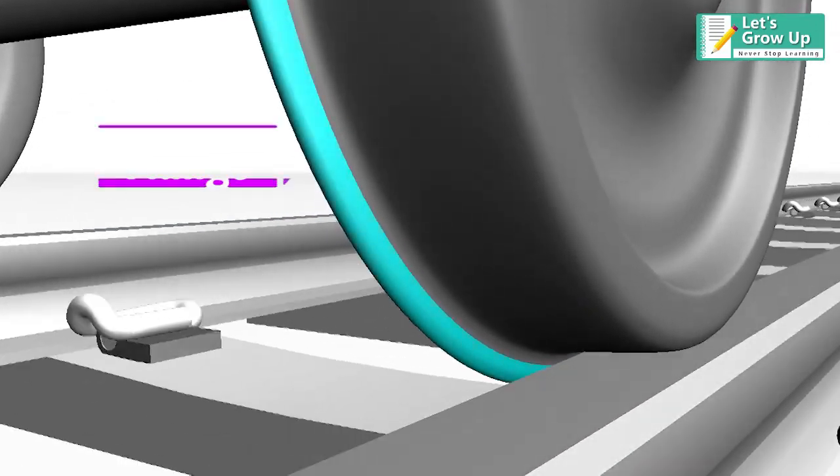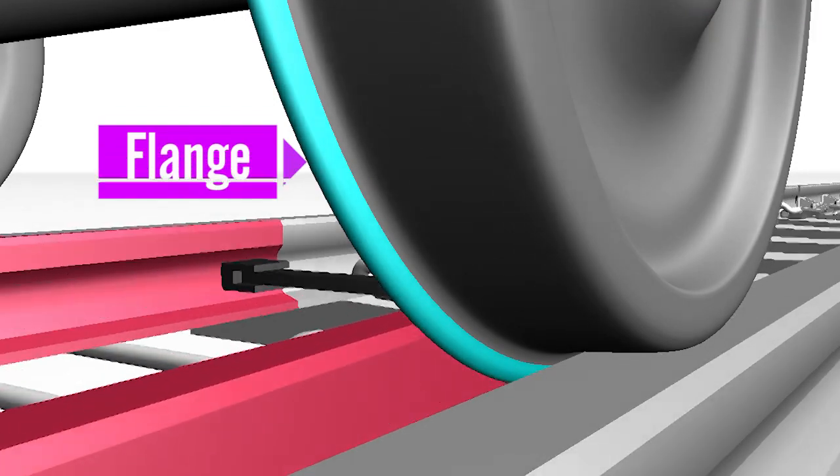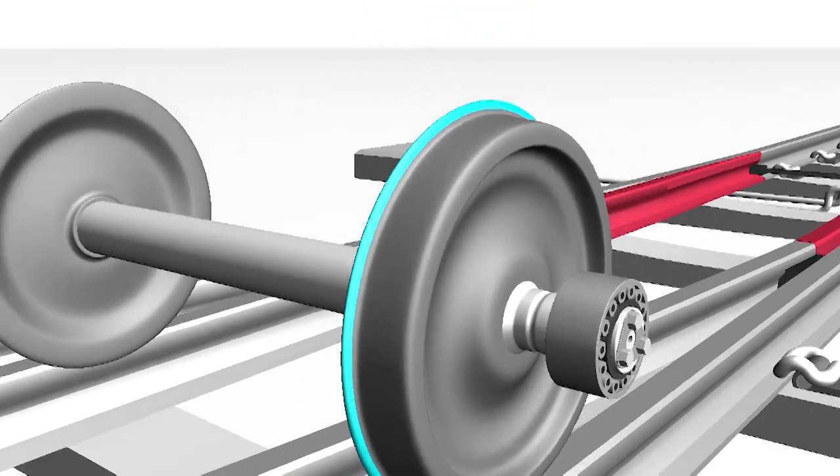These wheels are provided with a flange towards the inner side, which guides the wheels to travel on the rails and does not allow them to fall down from the track.